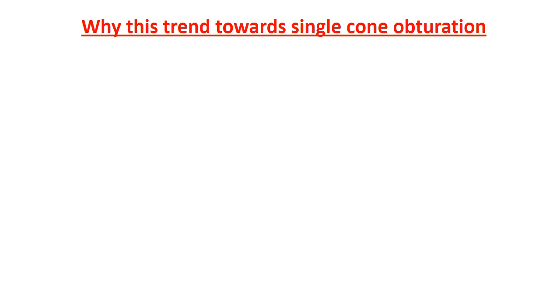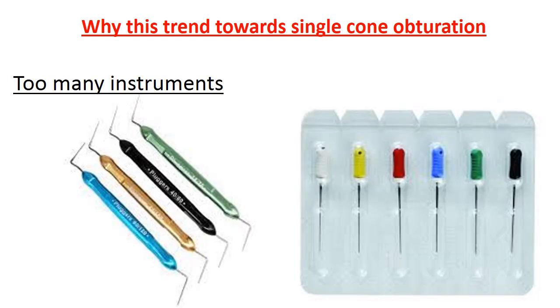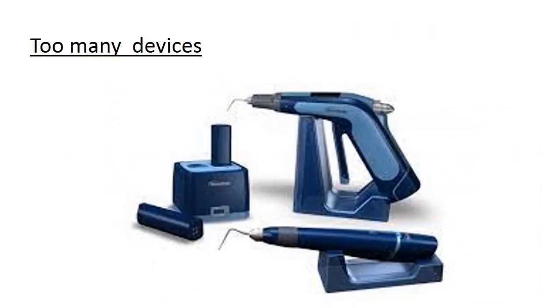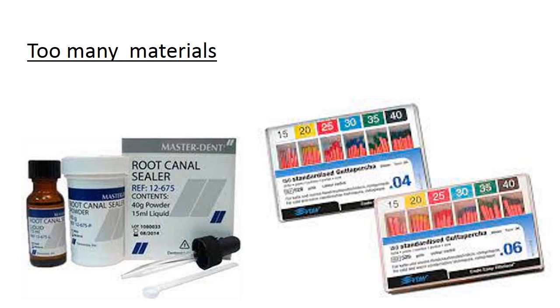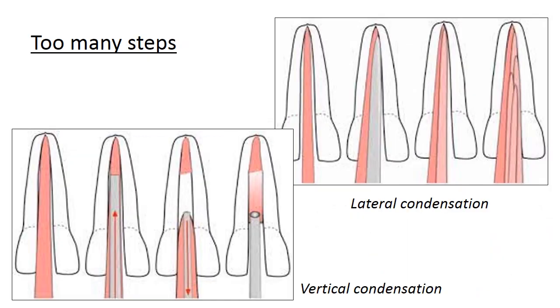So why is there a trend toward single cone obturation? First, with lateral condensation and vertical condensation techniques, there are too many instruments — pluggers and spreaders of different sizes — too many steps, too many auxiliary cones, sealers, and too much time and cost needed.